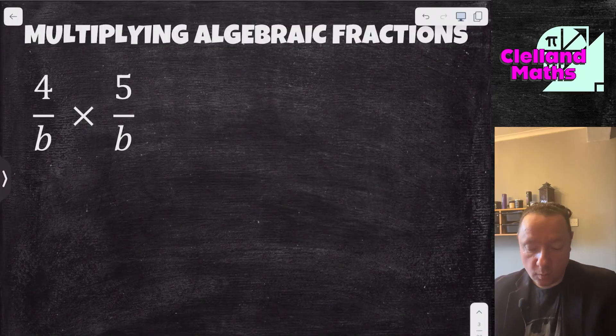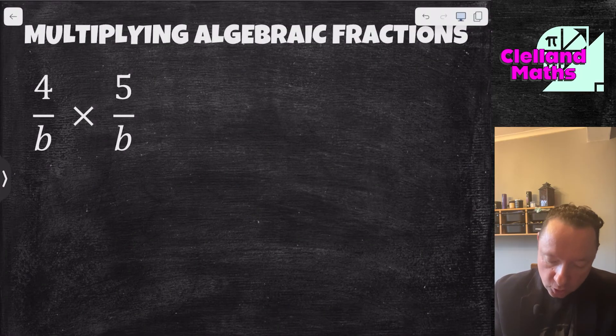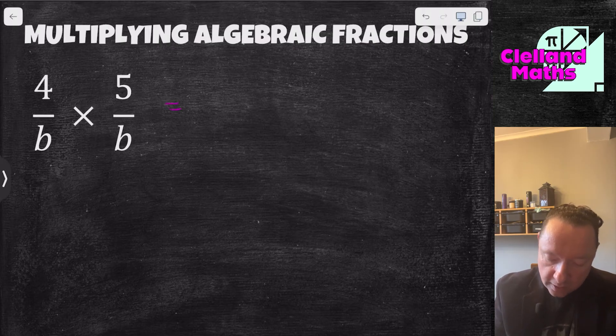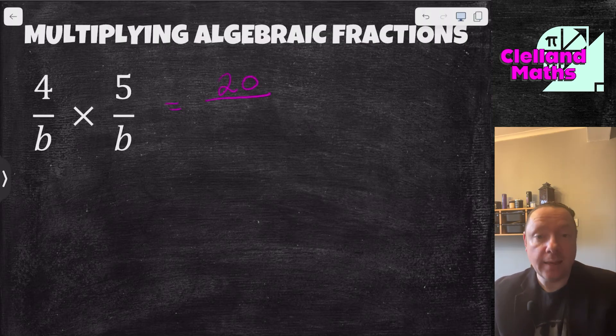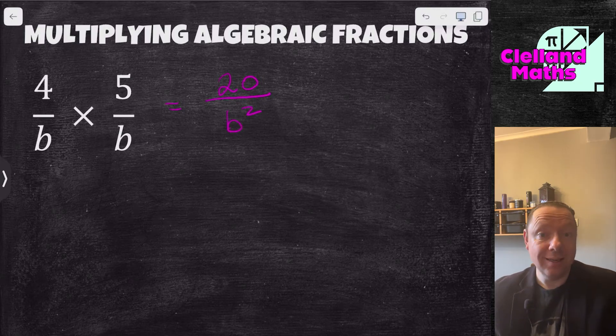Welcome back — one more example multiplying algebraic fractions. Times the top: 4 times 5 is 20, and B times B is B squared. And we're done there.